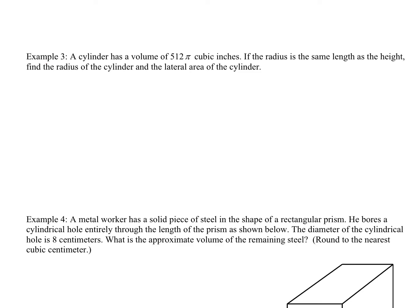Problem three says a cylinder has a volume of 512 cubic inches. The radius is the same length as the height — find the radius and the lateral area. Since radius equals height, I'll substitute r for h in the volume formula. Volume equals area of the base times the height, so 512 equals pi r squared times r. Instead of leaving it as h, I'll change it to r since the radius and height are the same.